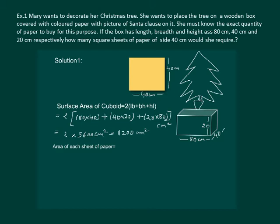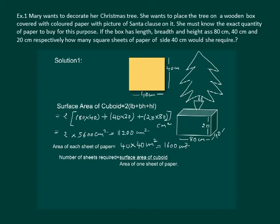To find how many sheets of paper will be required, let us first find the area of each sheet of paper. Area of a square sheet = side² = 40 × 40 = 1,600 cm². Then the number of sheets required will be equal to the surface area of the cuboid divided by the area of one sheet of paper, which comes out to be 11,200 ÷ 1,600 = 7 sheets of paper.